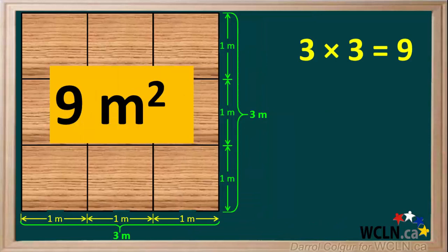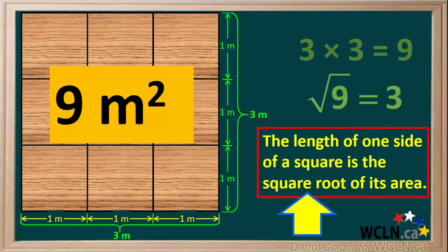Because 3 times 3 is equal to 9, we can say the square root of 9 is equal to 3. So we have shown that the length of one side of a square is the square root of its total area.